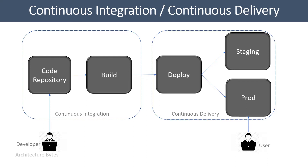This process may be kicked off based on events. An example of an event would be a person checking in code into the code repository, and as a result of that a build might be initiated. So all of this put together is called a CI/CD pipeline.